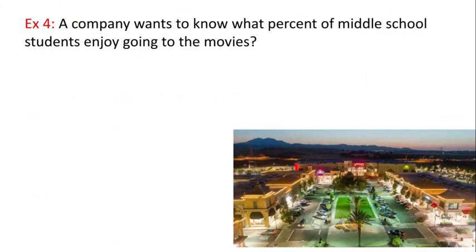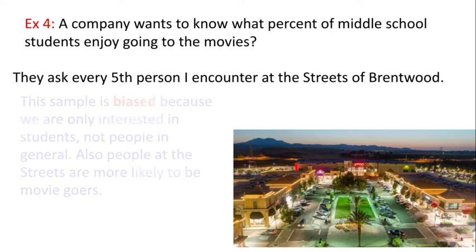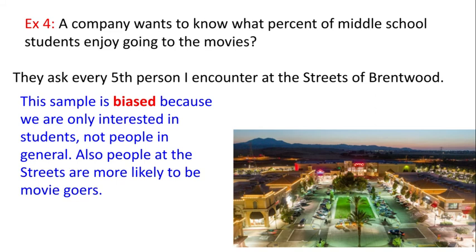Last example: a company wants to know what percent of middle school students enjoy going to the movies, so they ask every fifth person they encounter at the Streets of Brentwood. Pause the video — do you think this is a representative or biased sample? This sample is biased because we are only interested in students, not people in general. If you ask at the Streets of Brentwood, you're likely to get all kinds of people. Also, people at the Streets are more likely to be moviegoers because there's a movie theater right there, so your information is not going to represent all middle school students.